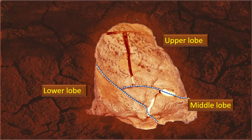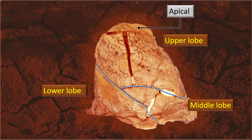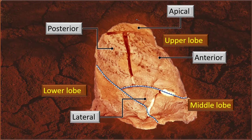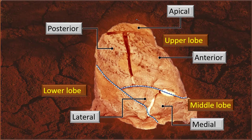Now let's try to identify the same segments on the costal surface — the surface adjacent to the thoracic wall. Upper lobe, middle lobe, and lower lobe are demarcated by the blue-white dashed lines. Apical, anterior, and posterior segments are visible. Note that cotton has been placed to enhance the gaps between the bronchopulmonary segments. Likewise, the lateral and medial bronchopulmonary segments of the middle lobe are visible. We have not yet covered the inferior lobe, so we will come back to that.